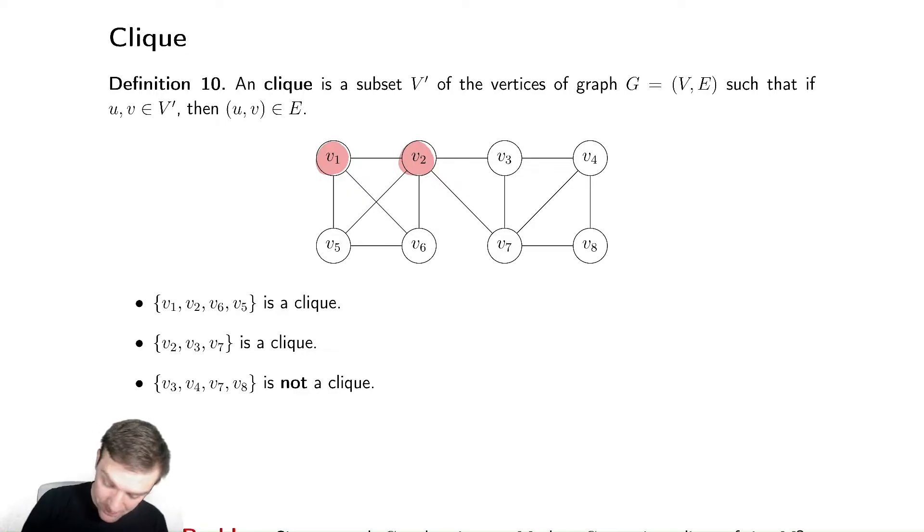Let's look at some more complicated ones. Let's look at a clique of size 4. A clique of size 4 here is V1, V2, V6, and V5.